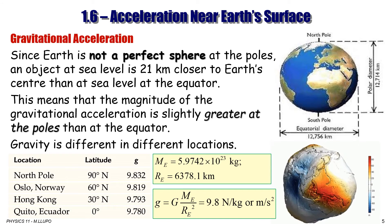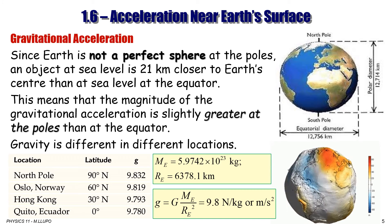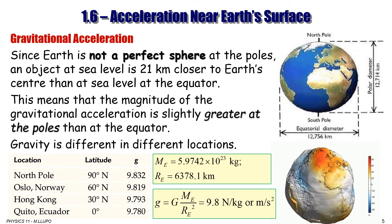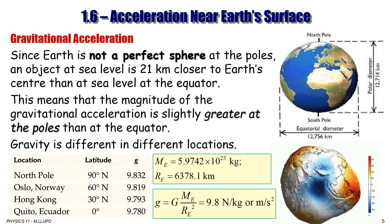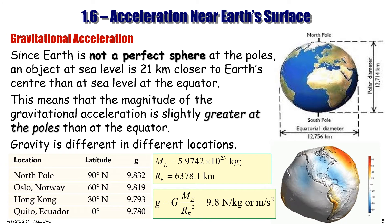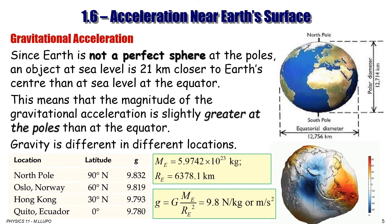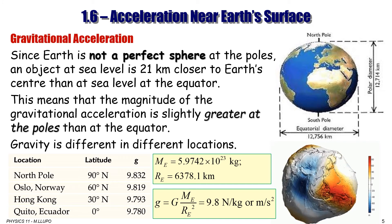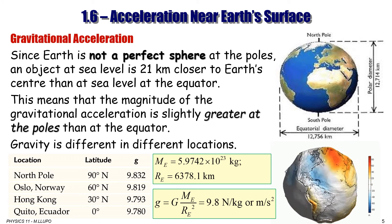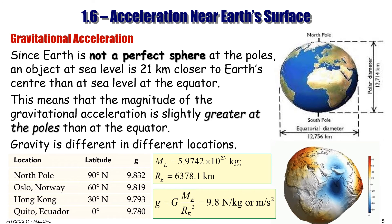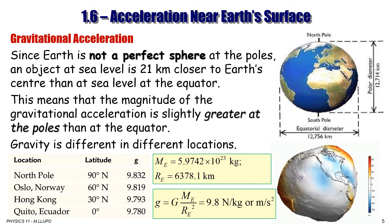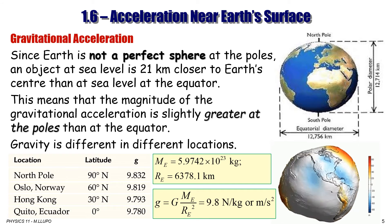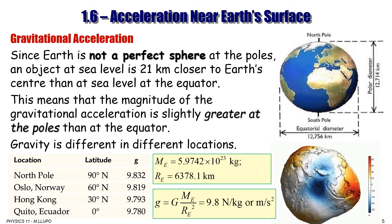Earth is not even close to a perfect sphere. If you look at the ocean floor without water, the gravitational acceleration is stronger. At the top of a mountain, gravitational pull is much weaker because you are further from the center of the Earth. You should take these factors into consideration.